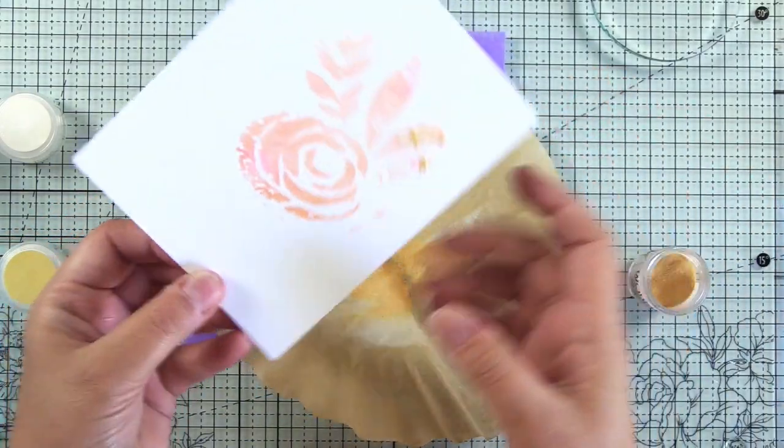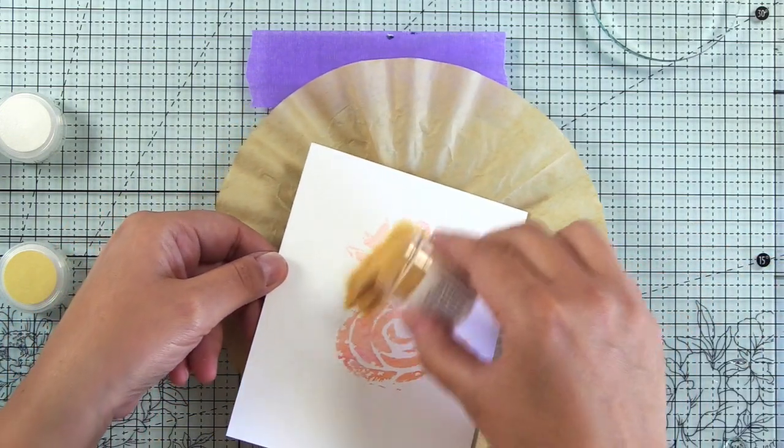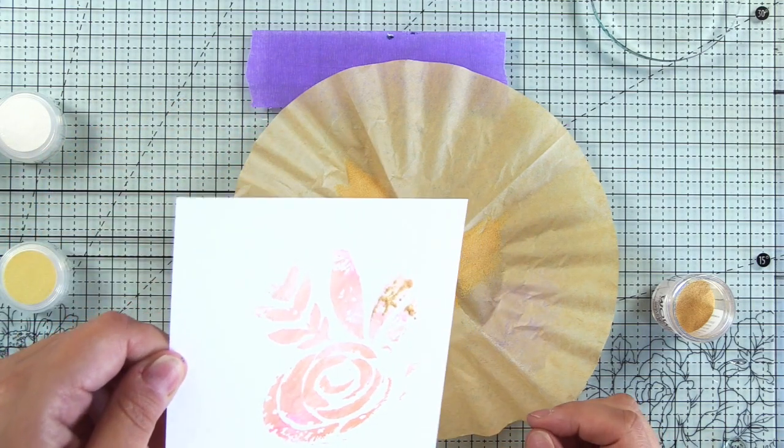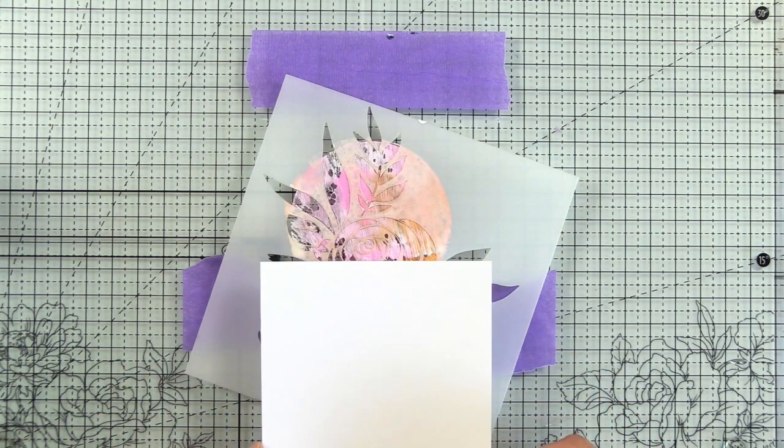This one had some chunky paint that was still wet and you can see that it sticks to that really well. So what I would recommend if you're heat embossing these is right after you do your print, go ahead and do your heat embossing. And that's what I'm going to show you here.